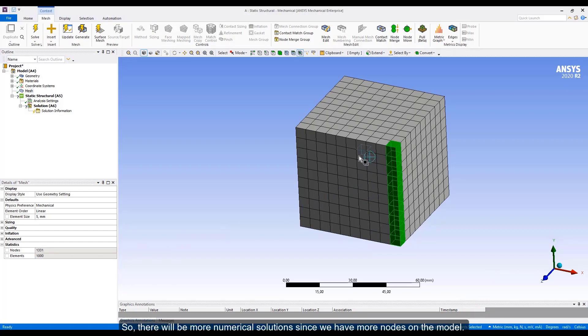Nodes and elements number has increased at least 4 times. So, there will be more numerical solutions since we have more nodes on the model because it will compute each solution on each node. So, that's all. See you next!